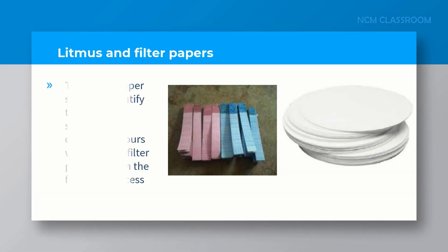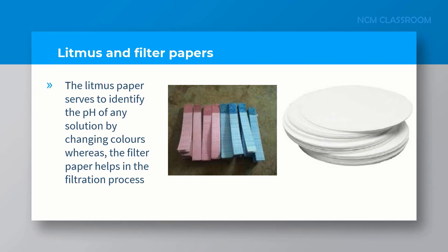Litmus and filter papers. The litmus paper serves to identify the pH of any solution by changing colors, whereas the filter paper helps in the filtration process.